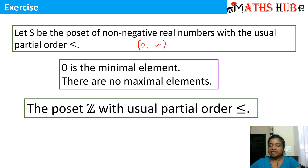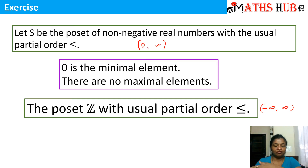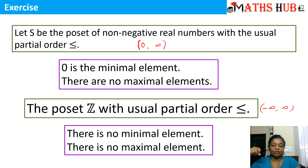The poset Z, the set of integers, with the usual partial order less than or equal to, extends from minus infinity to plus infinity. If you check for the lowest element, there is no lowest element — whenever you select a lower element you can always find a further lower element, since it extends to minus infinity. Similarly, for the maximal element, you will always find a higher number. So in the set Z with the usual partial order less than or equal to, there are no minimal and no maximal elements.